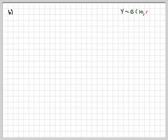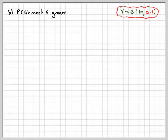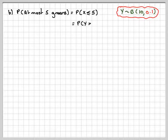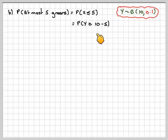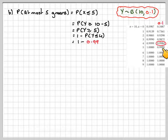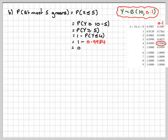Working that on our calculator, we get 0.0574. For part b, we want the probability of at most 5 greens, so we need the probability that X is less than or equal to 5. Reversing the inequality for the complementary gives Y greater than or equal to 10 minus 5, so Y must be greater than or equal to 5. That means we do 1 minus the probability that Y is less than or equal to 4. Using the tables, the 0.1 column gives 1 minus 0.9984, which equals 0.0016.